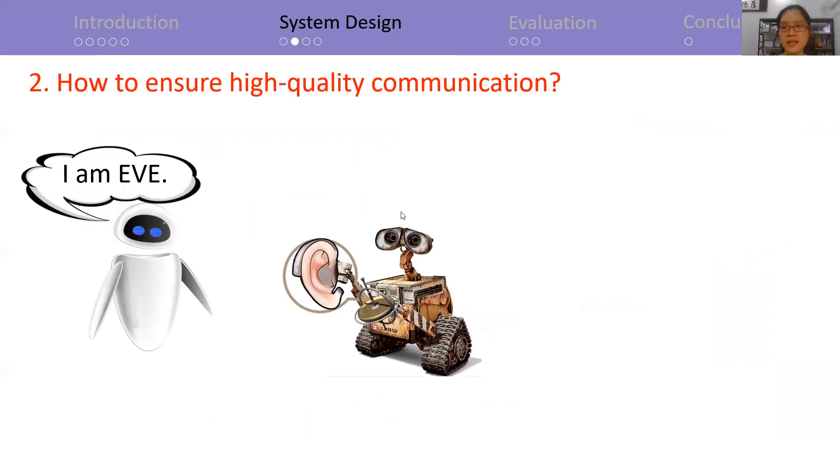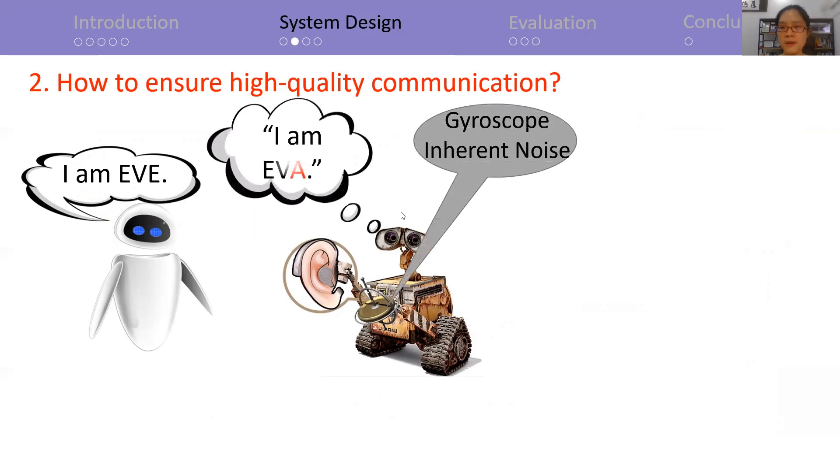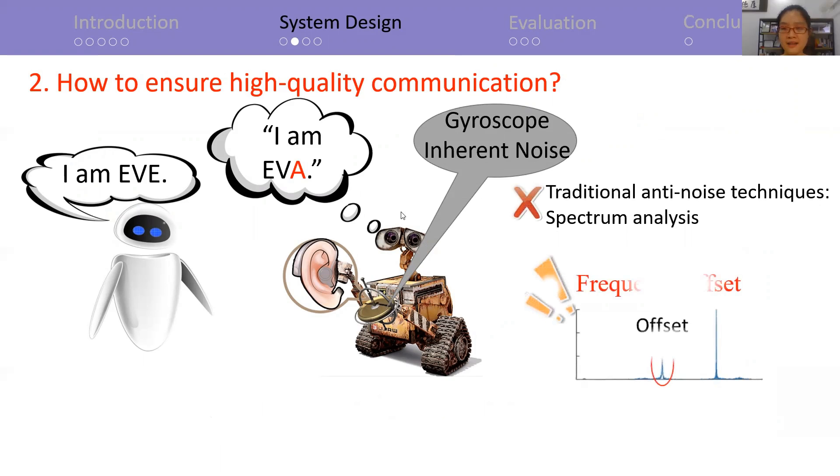Secondly, the communication quality is very important. However, because of the gyroscope's inherent noise, WALL-E may misdecode the received signal. Traditional anti-noise technologies are usually based on spectrum analysis, but the impact of noise is still significant because of random and unpredictable frequency offset.